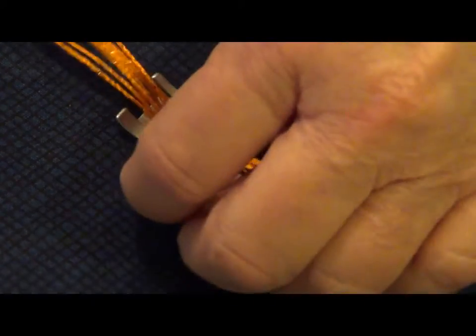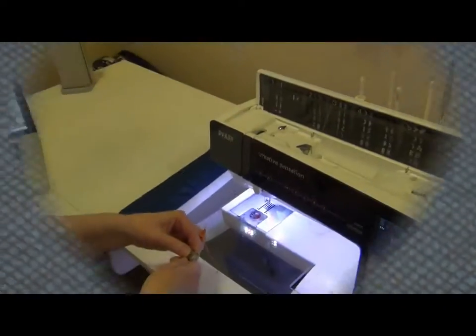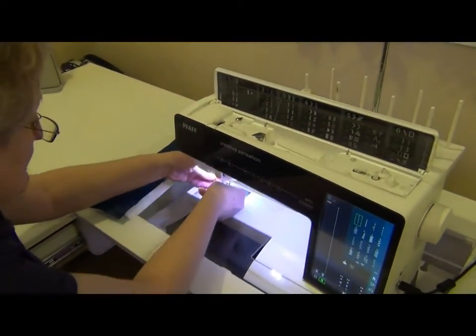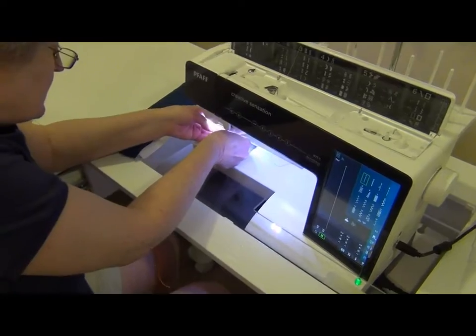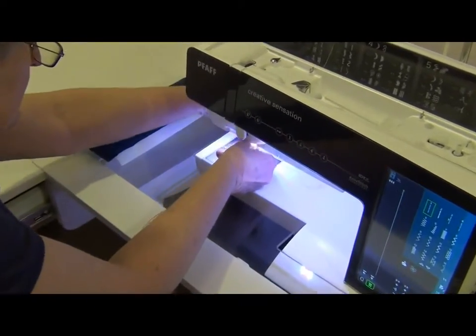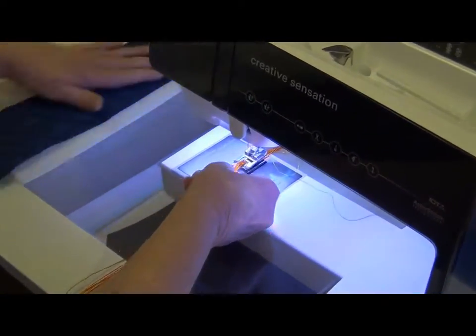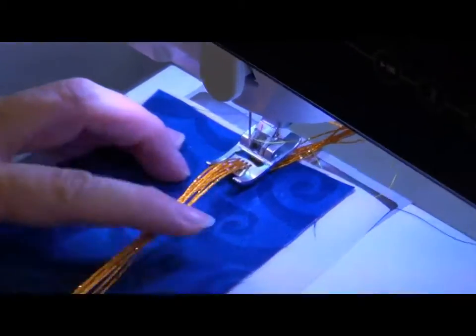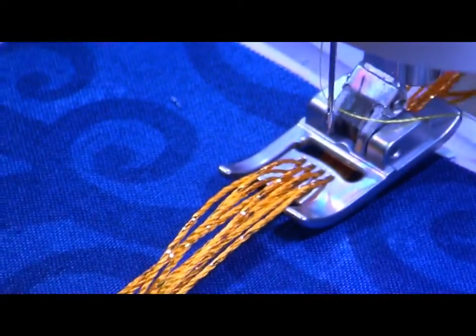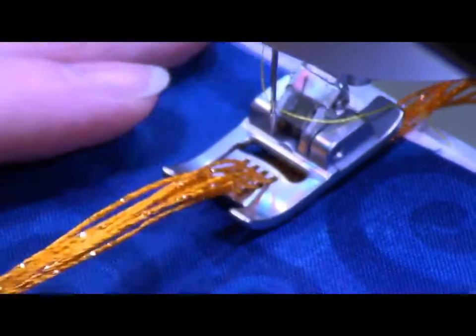So I'm going to take it over to my machine, snap my foot on, keep those tails I've knotted together all the way. And then I've chosen just a dark piece of fabric that you can see and I've put a little stabilizer behind it since it's just a narrow piece of fabric.